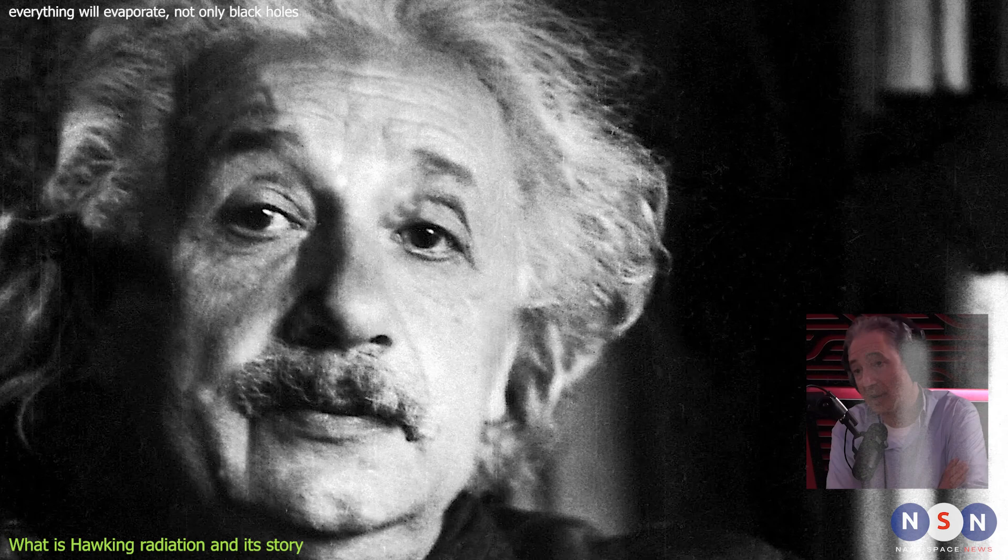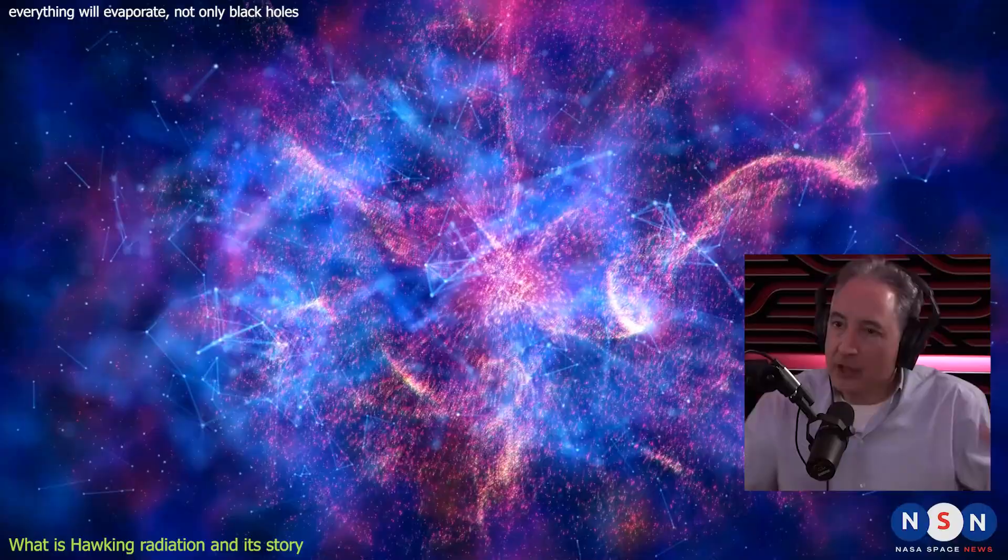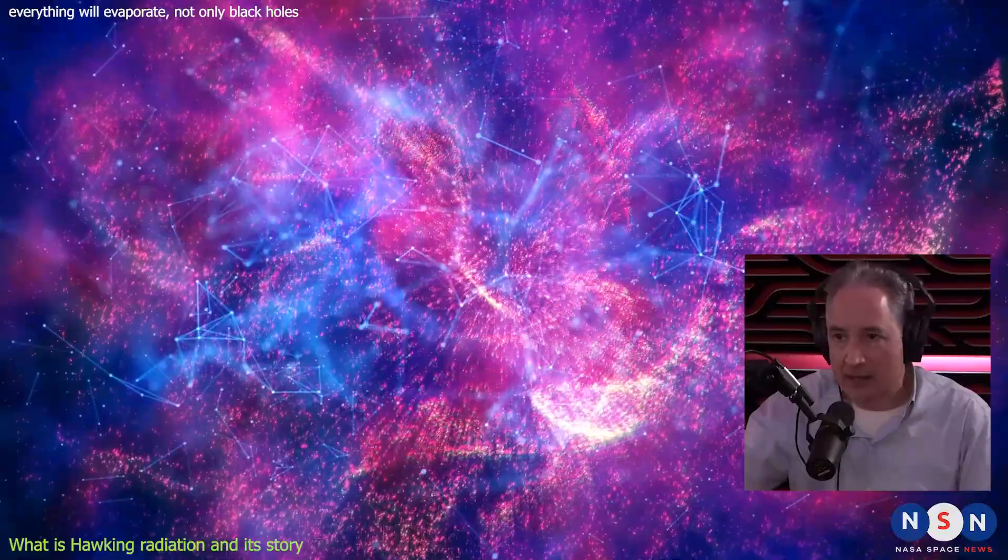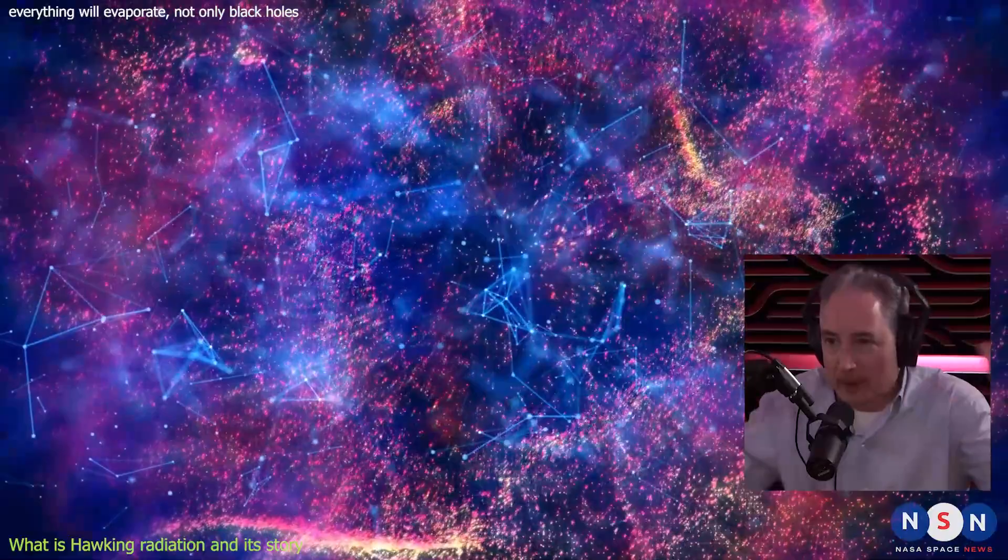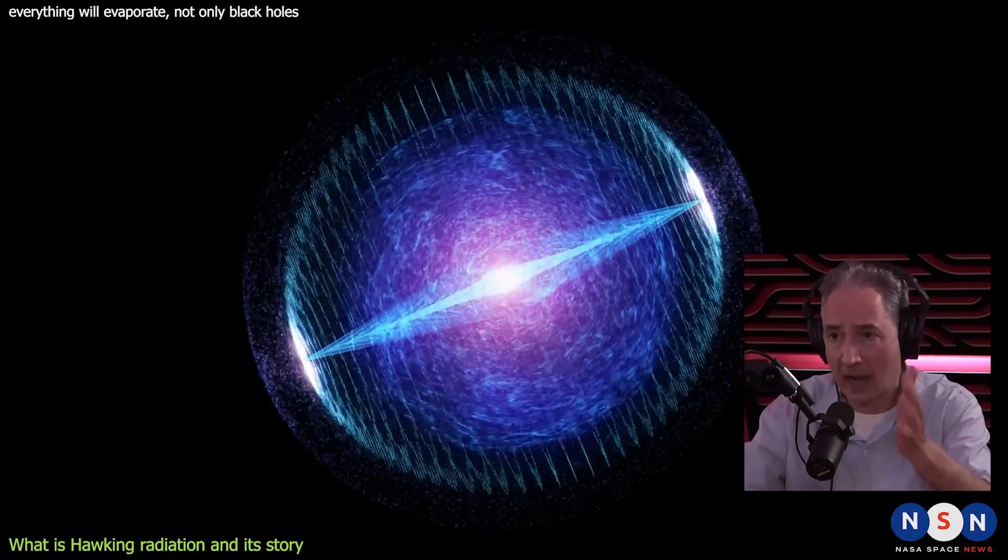When you look at Einstein's equations, there's a little formula that you can see where it says if you have any mass m and you squeeze it into a radius r that's less than two times Newton's constant, 2G times m divided by c squared, it is a black hole, period, end of story according to Einstein. Now Einstein left out quantum mechanics weirdly.